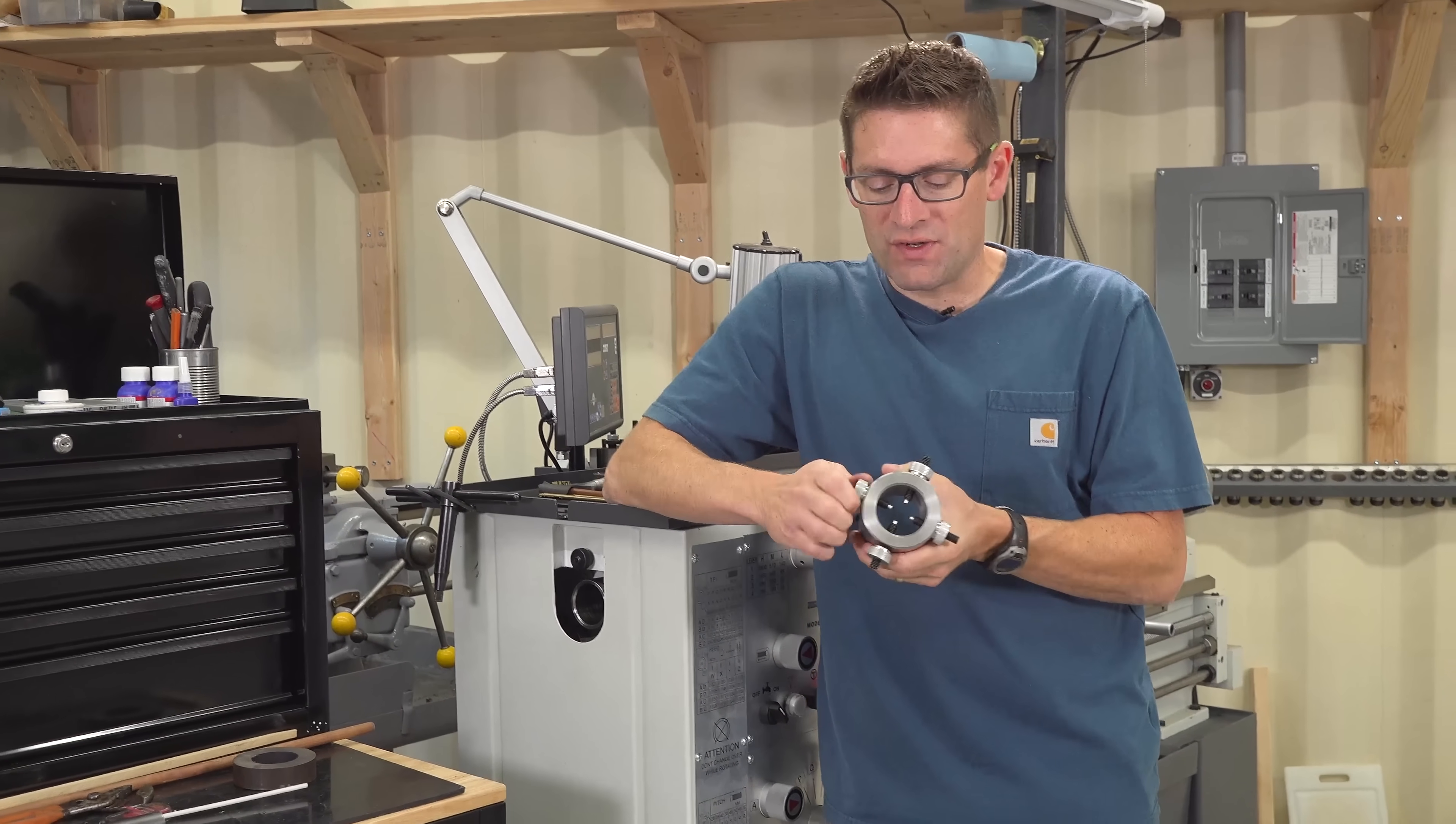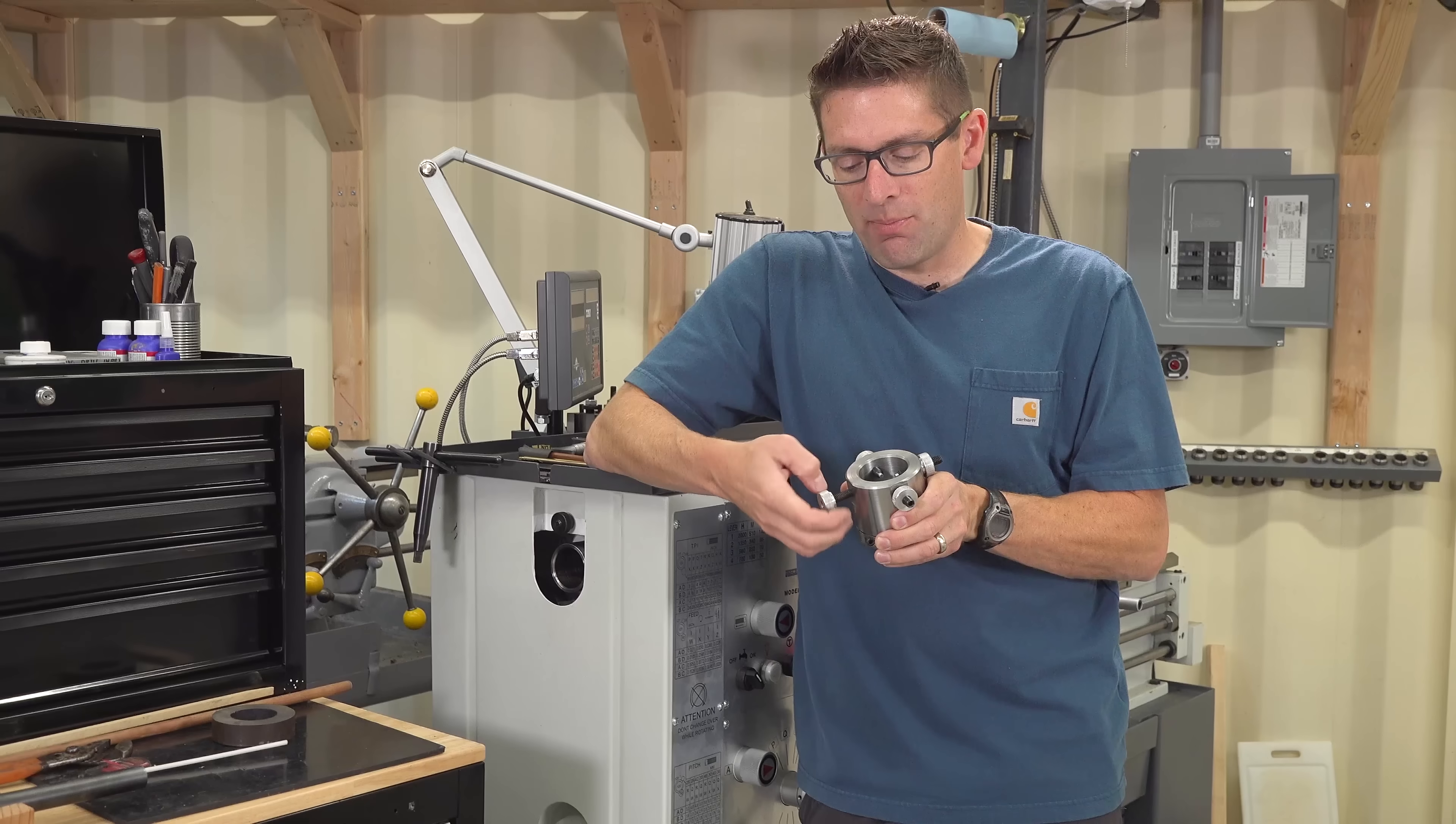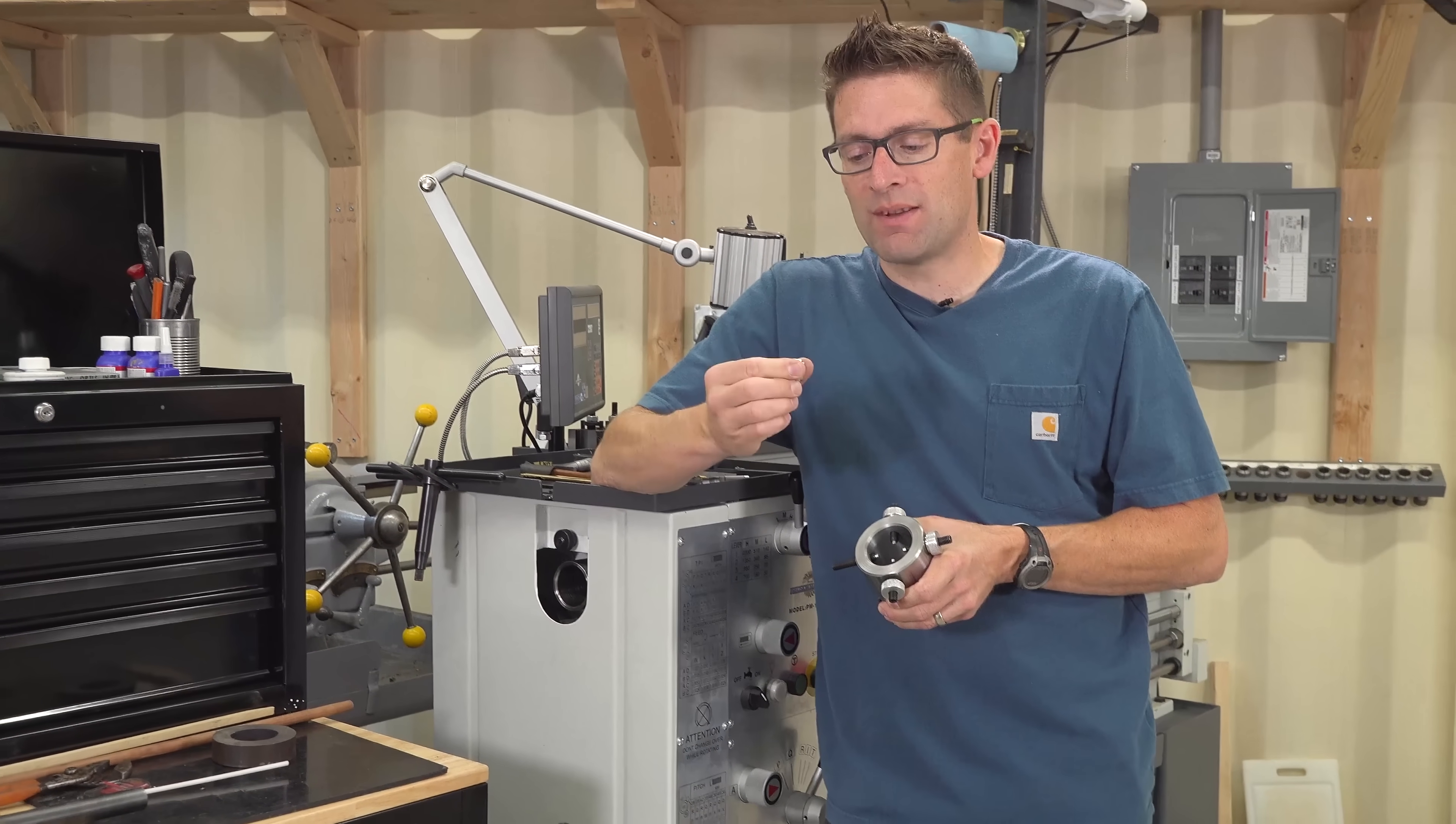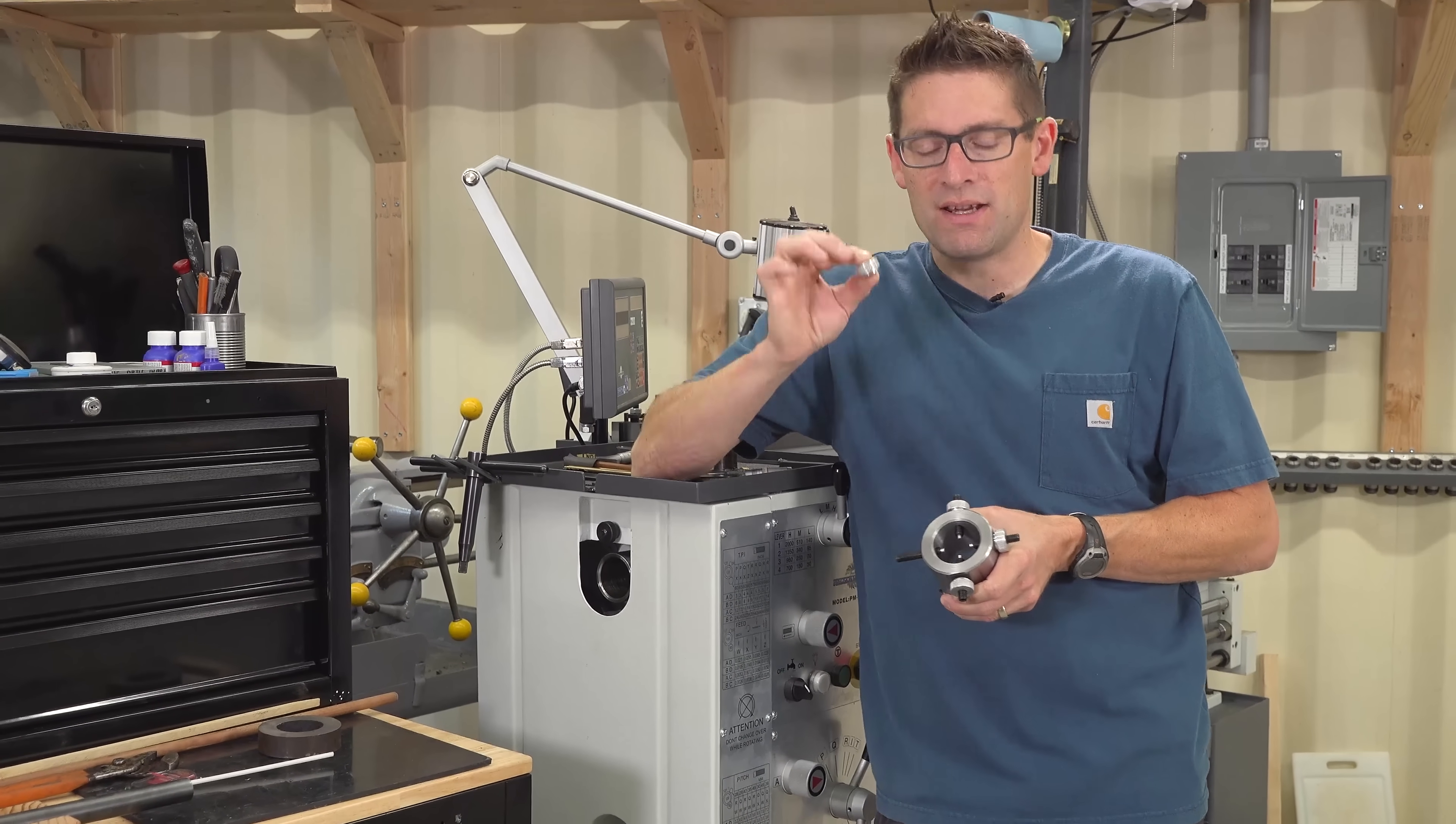After I was done with that I proceeded to work on these thumb screws and these were just machined from aluminum. I cut a little step on the end and then drilled the hole in the middle, did some power tapping and then some knurling on the outside. The knurling doesn't look perfect. I'm going to look for a different tool and I think adjust my technique just a little bit.